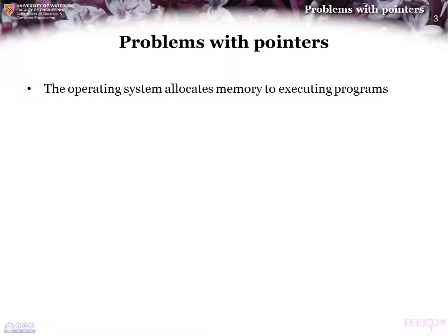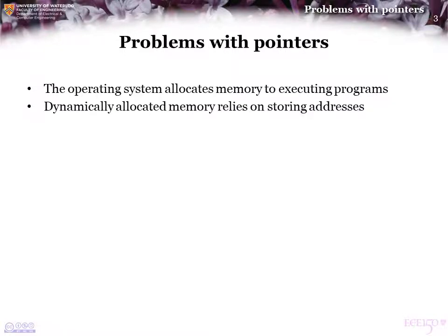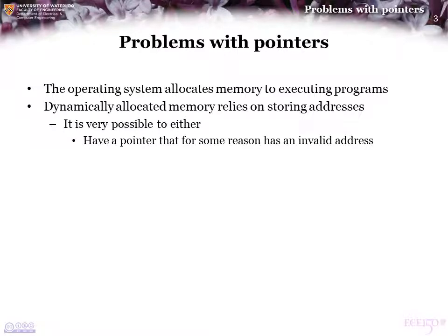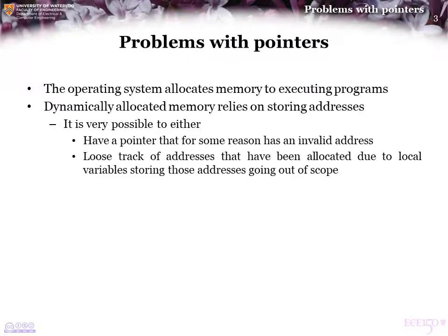The operating system allocates memory to executing programs. The compiler has dealt with the call stack. However, dynamically allocated memory relies, at least in C++, on appropriately storing addresses. It is therefore very possible to either have a pointer that has an invalid address, or to lose track of addresses that have been allocated due to local variables storing those addresses going out of scope.